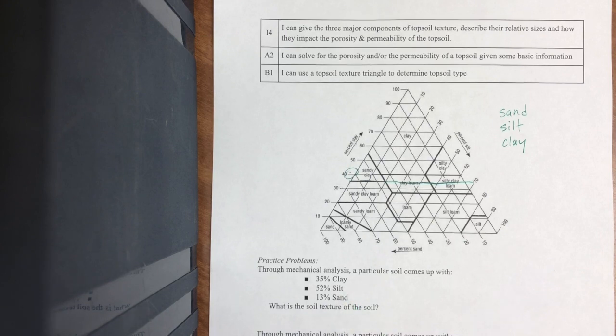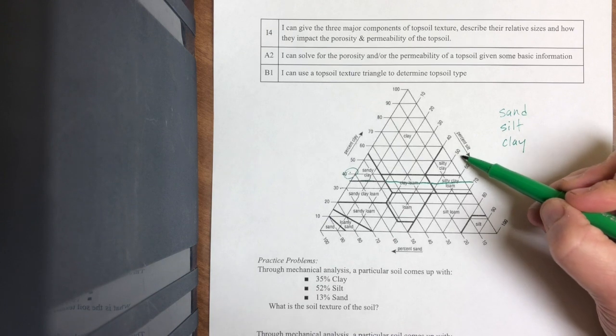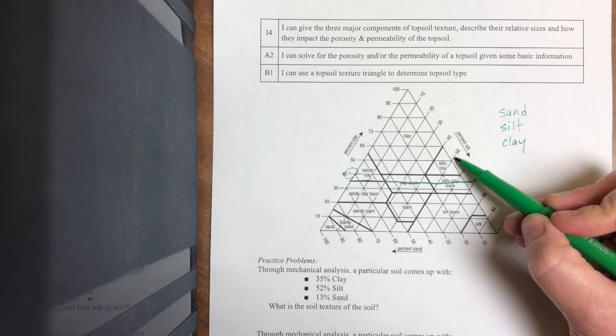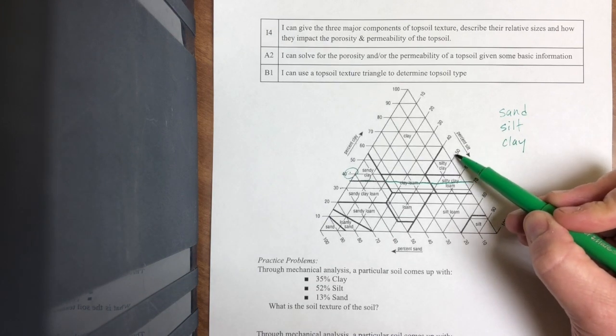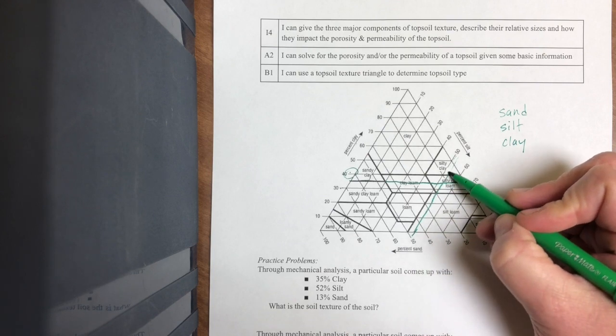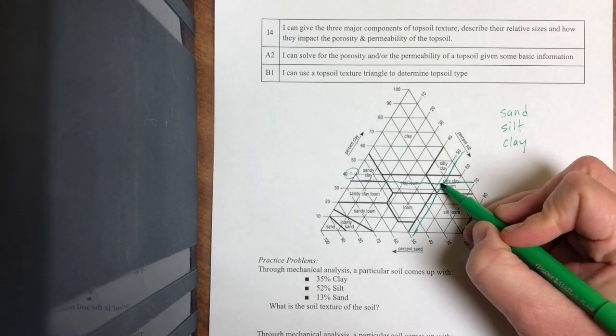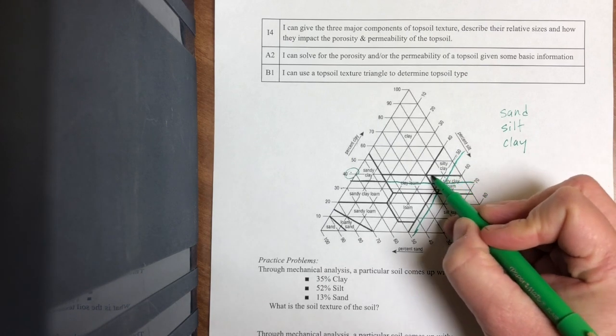Then it's 52% silt, so I'm going to come to the silt side. 52 would be between 50 and 60. Notice there's this angle here, so now I'm not going straight across, I'm following that angle. 52 looks like it's about there. And really where those two intersect here is in this box here.